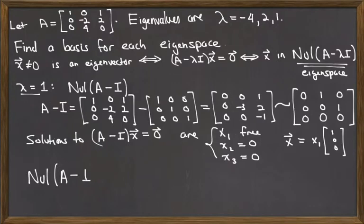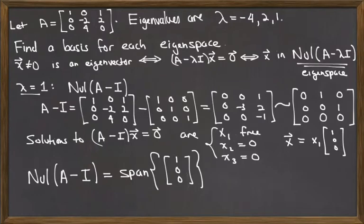And our conclusion, then, is that the null space of A minus I is the span of this single vector 1, 0, 0. And this vector here, 1, 0, 0, is an eigenvector for the eigenvalue of lambda equal to 1.